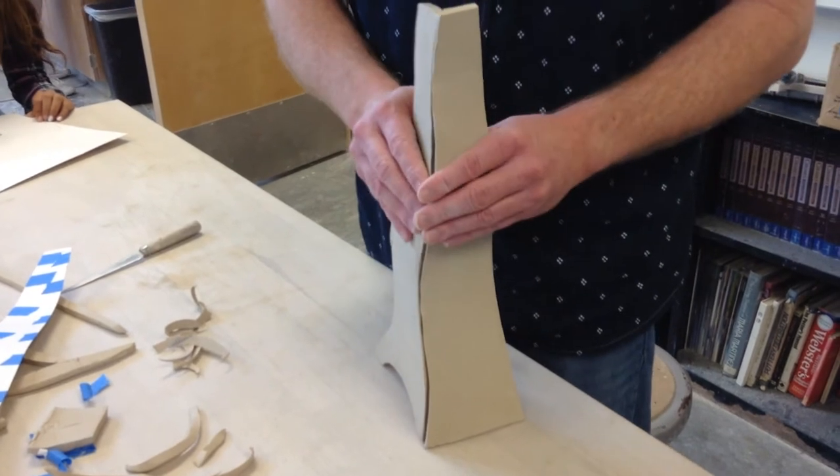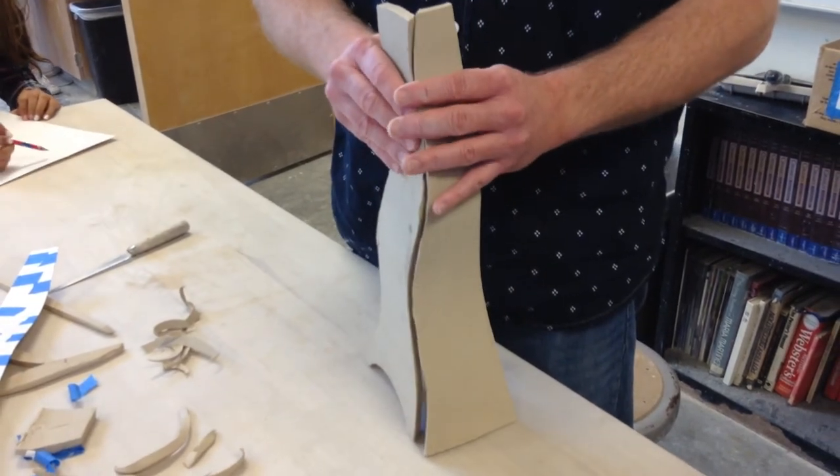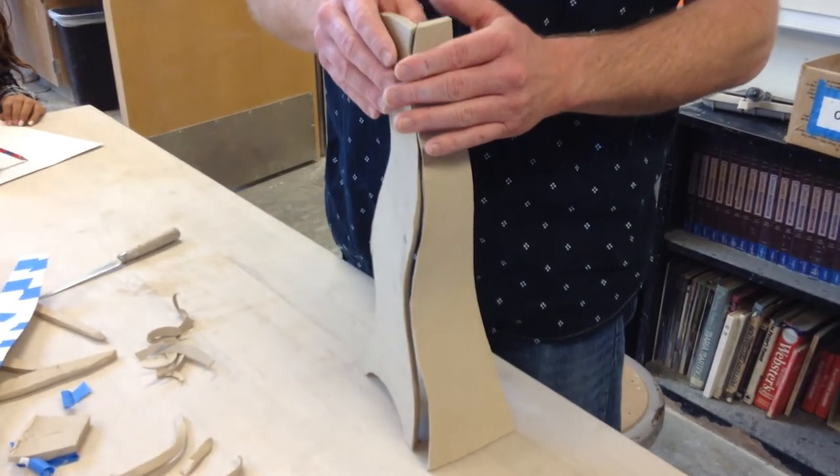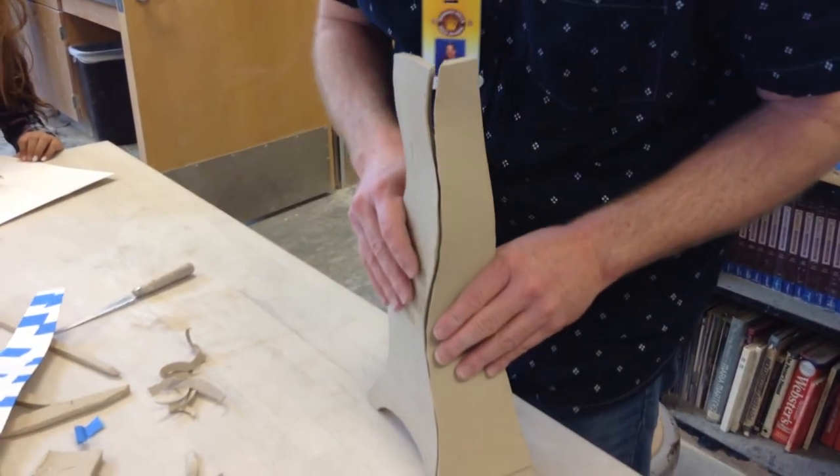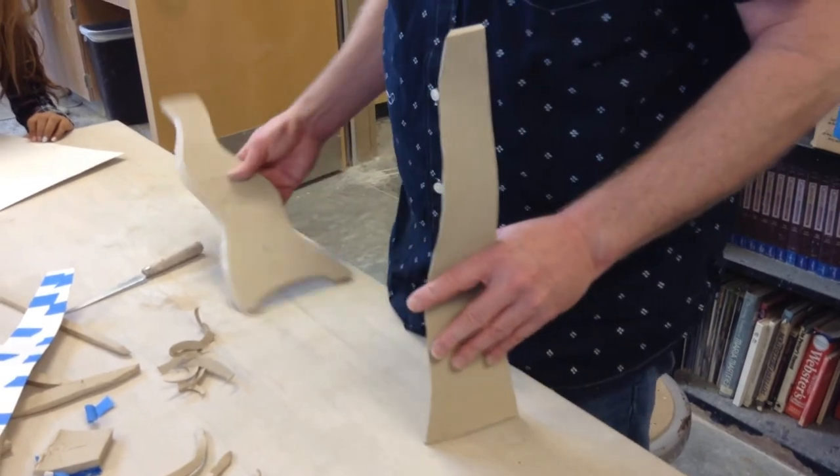This makes the best edge. You could do a butt joint, which is 90 degrees to 90 degrees, where they just butt up against each other like this instead of at an angle. But that has a much more visible and kind of a weaker seam.